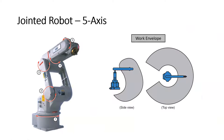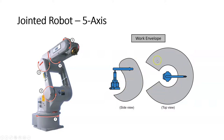A jointed five-axis robot has five axes: rotation at the waist, a shoulder joint, an elbow joint, an arm joint, and a hand joint. In the side view, the work envelope shows the area the robot arm can move through without hitting itself. In the top view, the robot can swing the arm roughly 315 degrees. Each robot is slightly different in its specific work envelope.